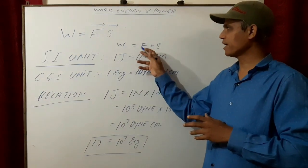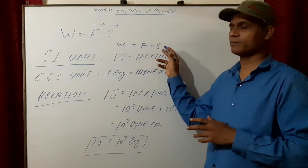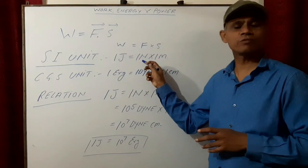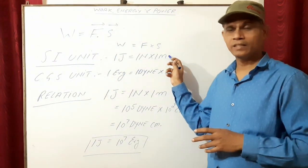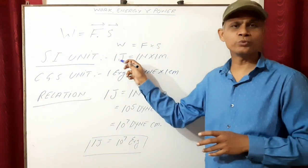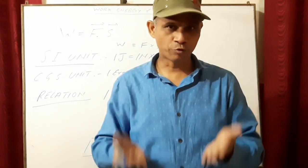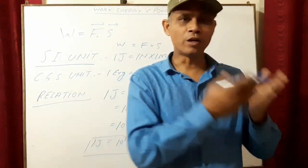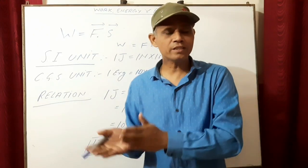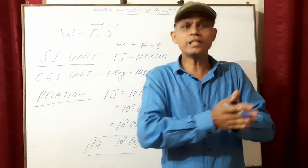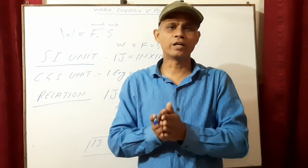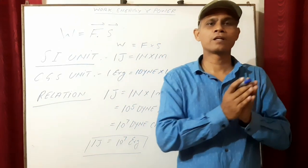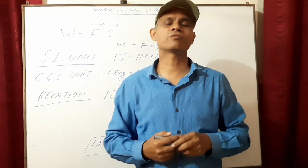You know work is F into S, force into displacement. If force is 1 Newton and displacement is 1 meter, then work is 1 Joule. That means if a force of 1 Newton displaces the body through 1 meter in the direction of force, then the work is said to be 1 Joule.